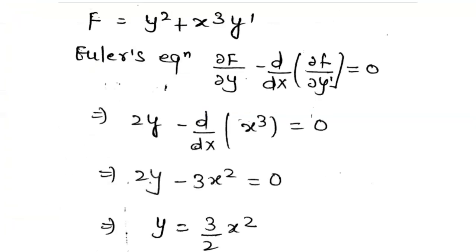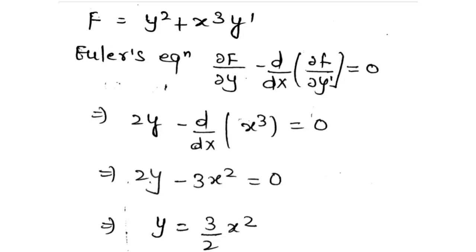For the solution, we have given y dash squared plus x cubed y dash. So Euler's equation is: del f by del y minus d/dx of del f by del y dash equals 0.